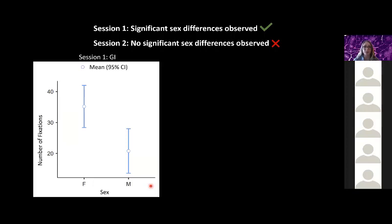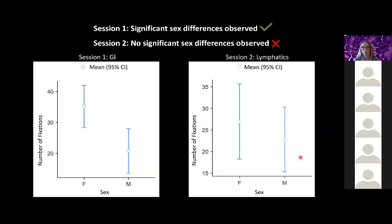This could be because during session one, women looked at more places on the screen, they stared at more places on the screen, and also they took longer to answer. But this was not seen in session two, which means that we could have a compounding variable being introduced into our data.